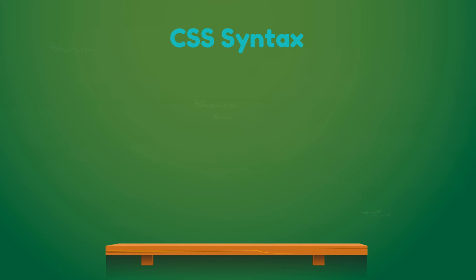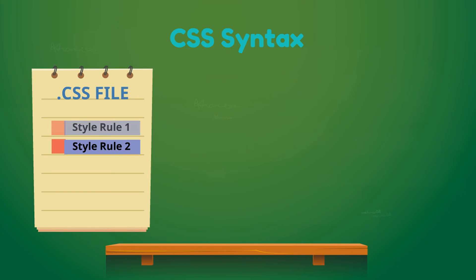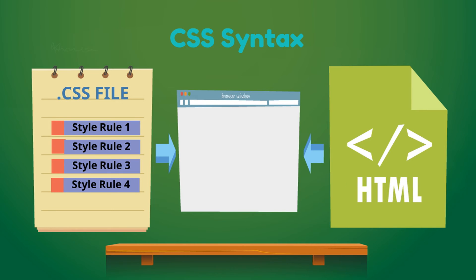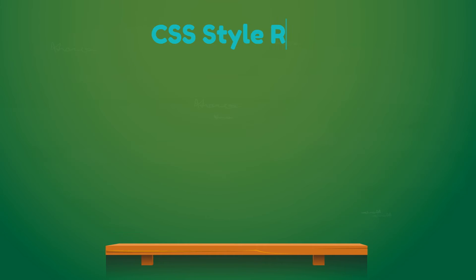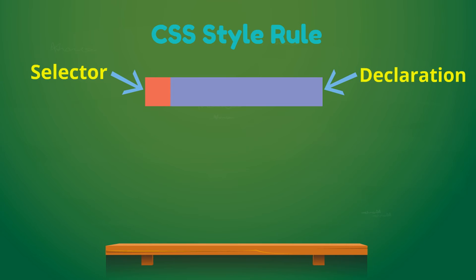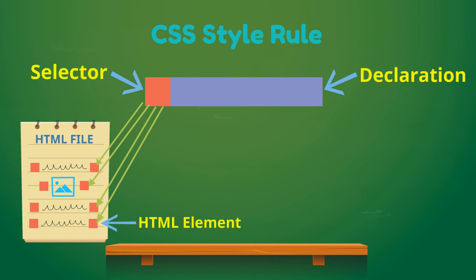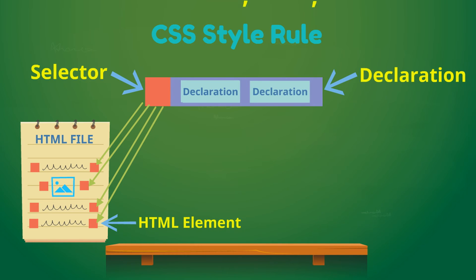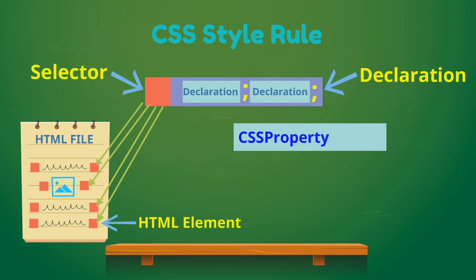Let's learn about CSS syntax. CSS is actually a collection of style rules that are interpreted by the browser and then applied to the corresponding element in your document. A style rule set consists of a selector and a declaration block. The selector points to the HTML element you want to style. The declaration block contains one or more declarations separated by semicolons. Each declaration includes a CSS property name and a value separated by a colon. A CSS declaration always ends with a semicolon and declaration blocks are surrounded by curly braces.